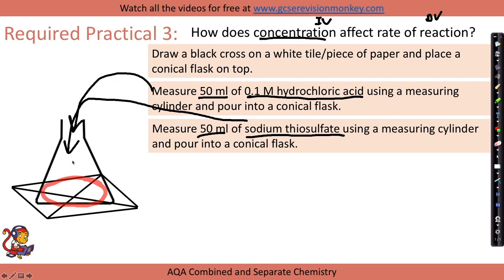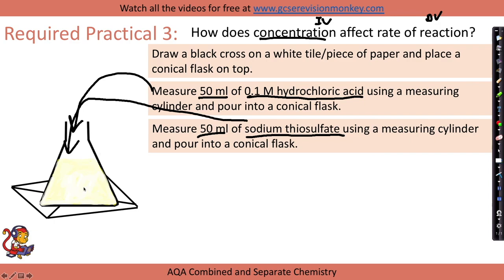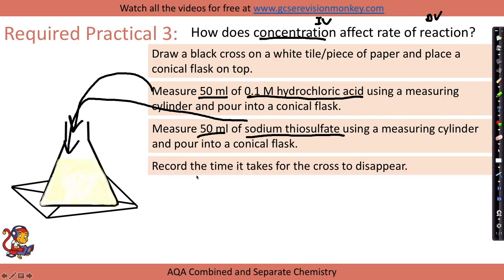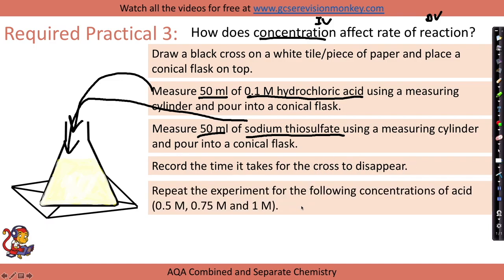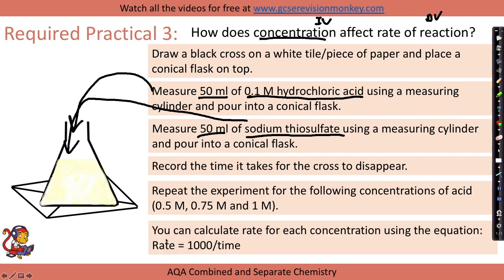When the acid and sodium thiosulfate are added, the solution is initially colourless and you can see the cross. Gradually a precipitate forms, making the solution go cloudy, and at that point you can no longer see the cross. Record the time it takes for the cross to completely disappear. This is subject to human error, as different people may judge the exact disappearance time differently. Repeat for concentrations of 0.5, 0.75, and 1 mol/dm³. Use the equation rate = 1000 ÷ time to calculate rate of reaction for each concentration.